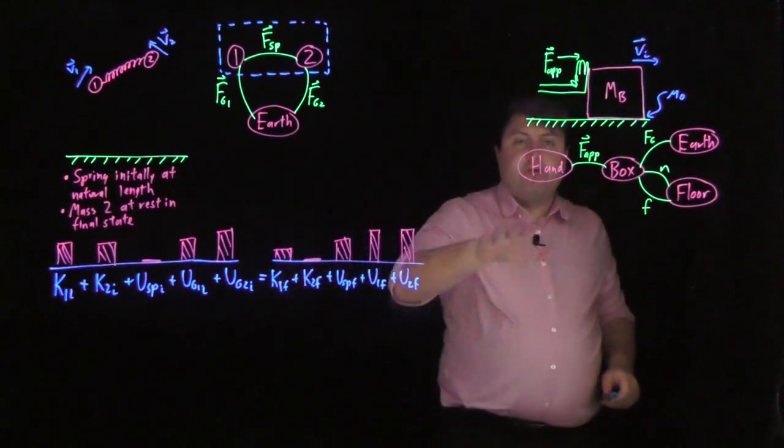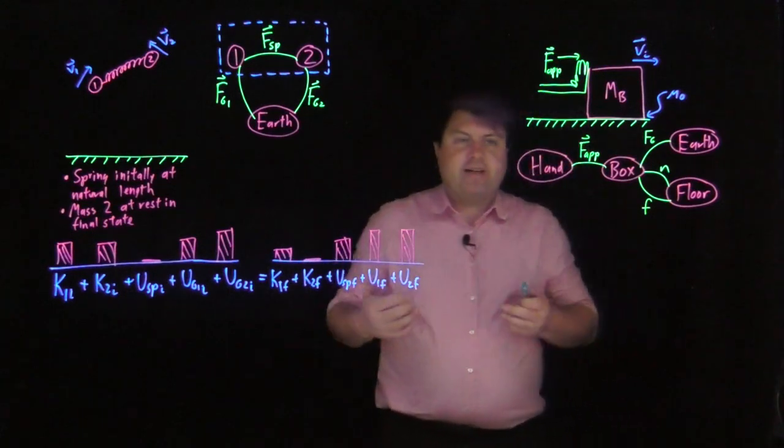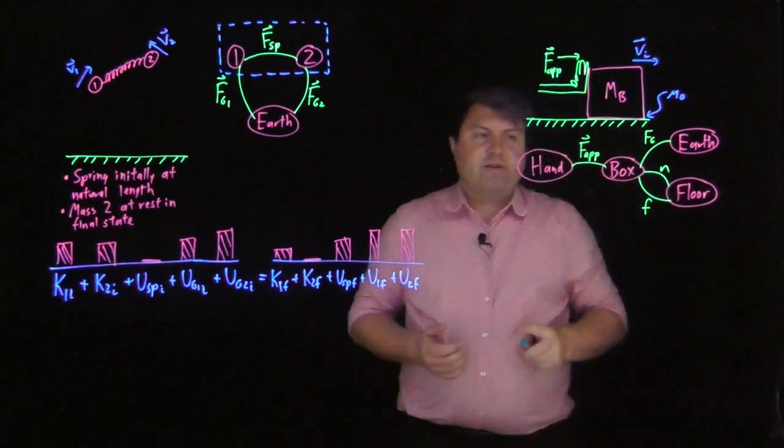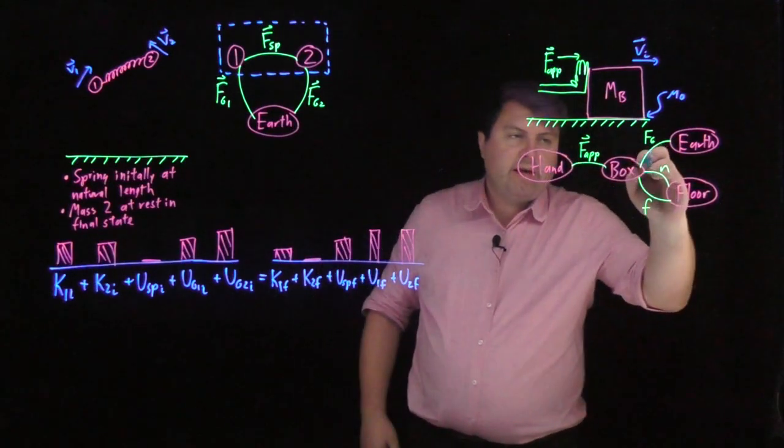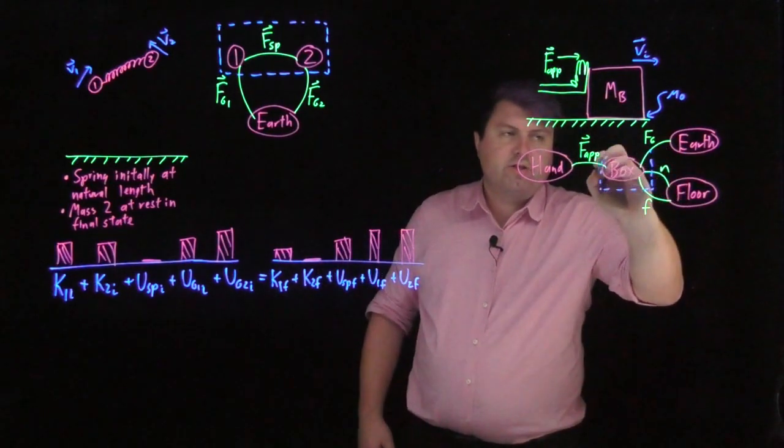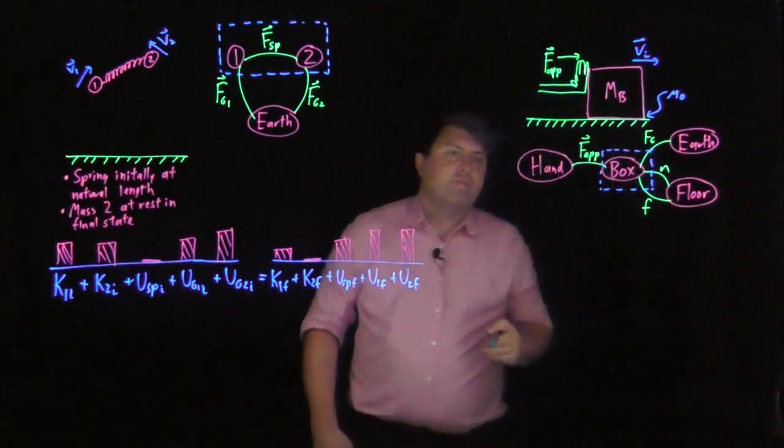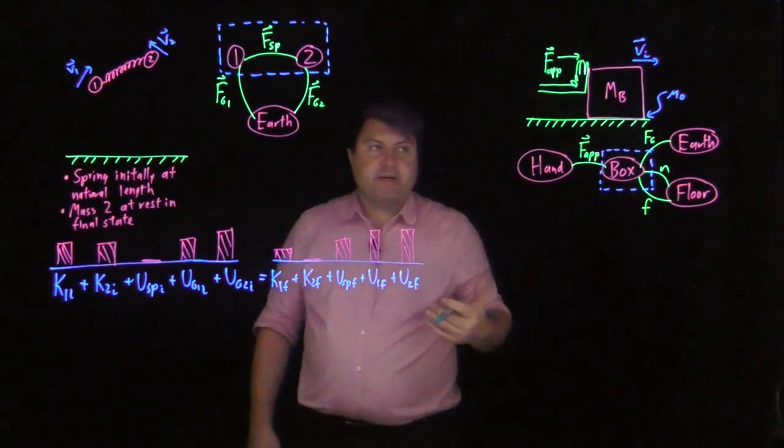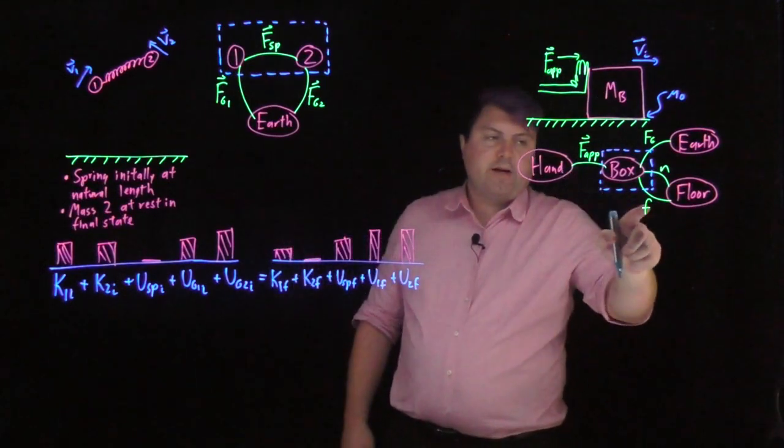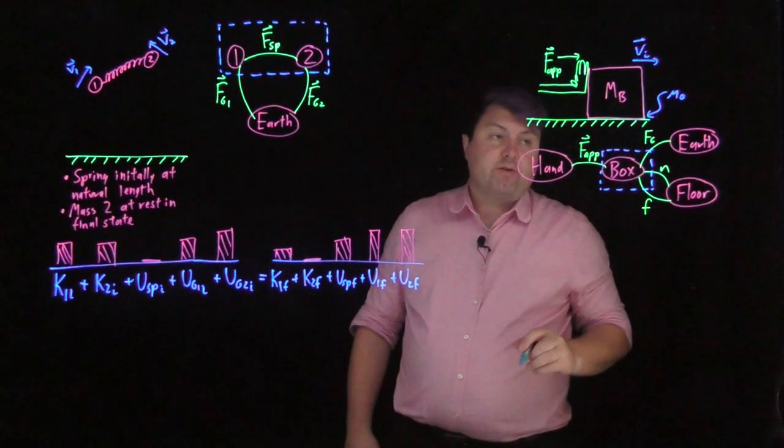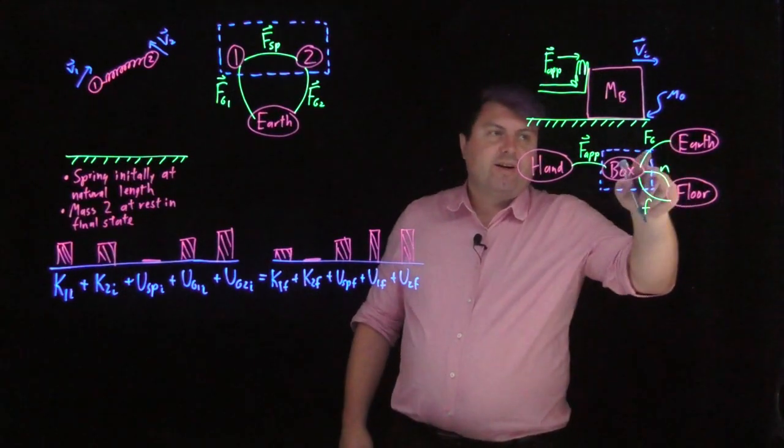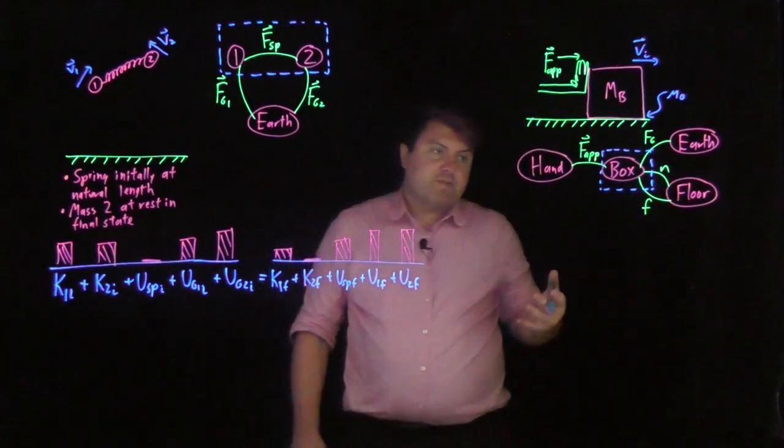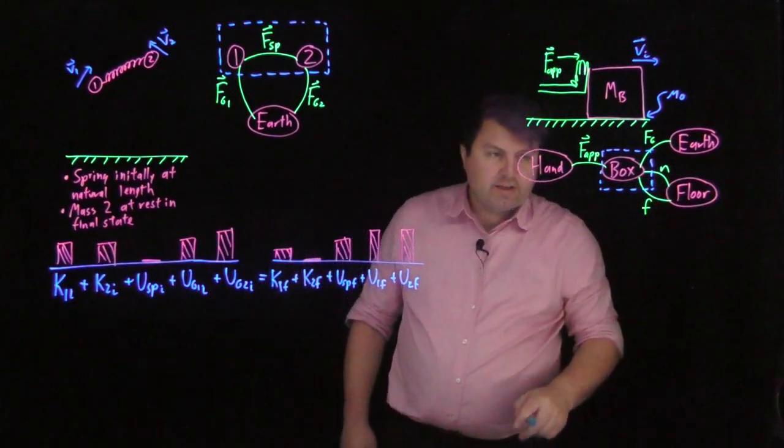Now, for this system, we don't want to include the hand because we don't know what's interacting with the hand too far out. We don't want to include all the things interacting with the Earth. We don't know what else is interacting with the floor. So our system really has to be this box and just this box. If we have just this box, then we have a couple of forces that don't conserve mechanical energy. The force applied and friction both don't conserve mechanical energy. Earth with gravity does conserve mechanical energy. The normal force has no work, so it conserves mechanical energy. It's a trivial case of zero.